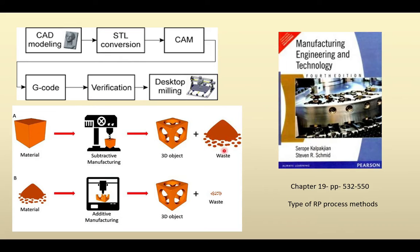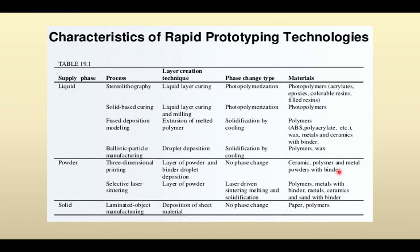In subtractive manufacturing, the wastage is very high. In contrast, for additive manufacturing using powder form or filler material, almost all the material is fully converted into the workpiece — wastage is very, very less. In most cases, surface finish is also very good, so no additional machining is needed. For students having any confusion, you may refer to the Kalpakjian book. This table, also taken from the Kalpakjian book, classifies rapid prototyping by input material condition: liquid, powder, or solid.